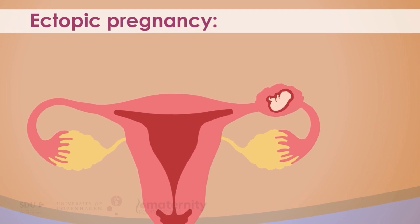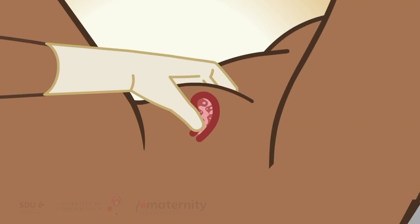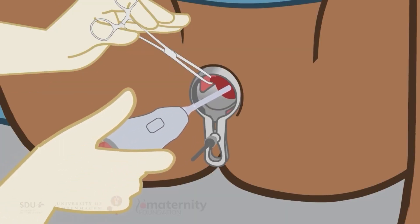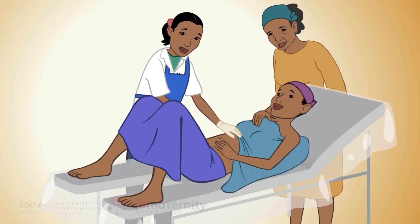Ectopic pregnancy. An ectopic pregnancy is a pregnancy that remains outside the uterine cavity — it is almost always placed in one of the fallopian tubes. It happens in around 1 in 100 pregnancies. It can become life-threatening if it ruptures and causes intra-abdominal bleeding. Consider an ectopic pregnancy if the woman is experiencing: uterus smaller than expected gestational age, abortion with suspiciously little tissue expulsed, or suspected ongoing pregnancy after abortion.